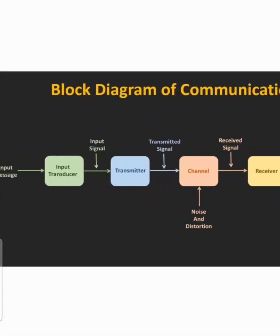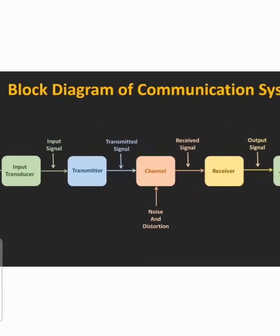After modulation, amplifiers will amplify the respective signal. The last block in our transmitter is the transmitting antenna, which will transmit the respective signal towards the receiver. So the transmitter's output is the modulated signal.